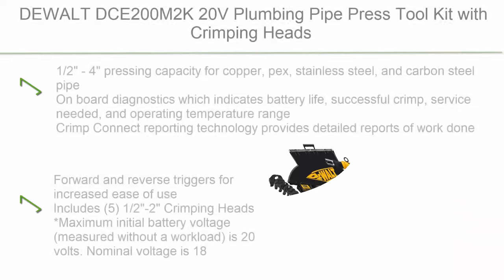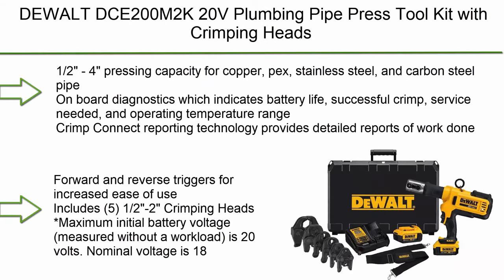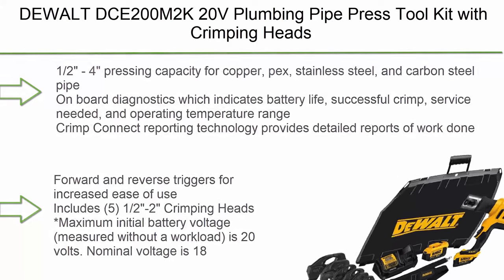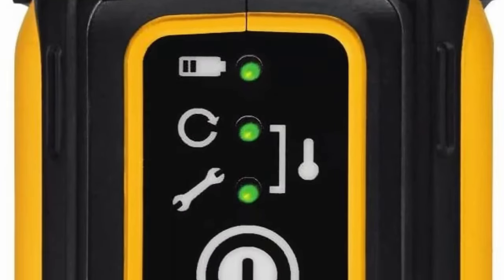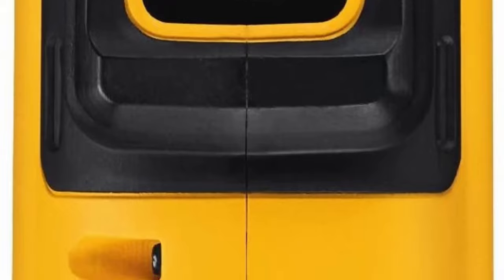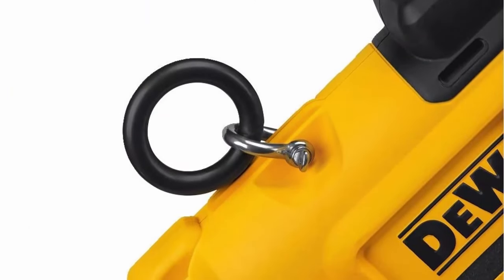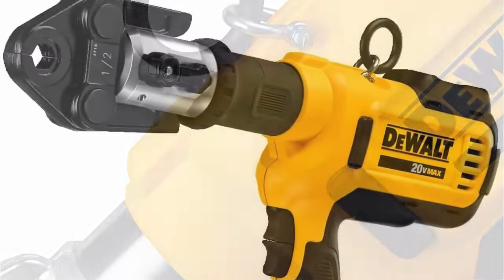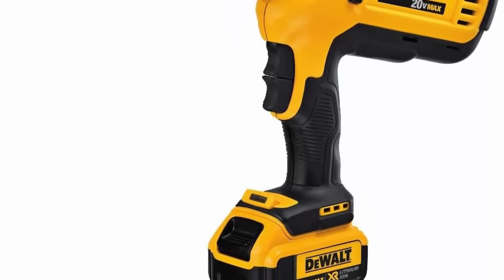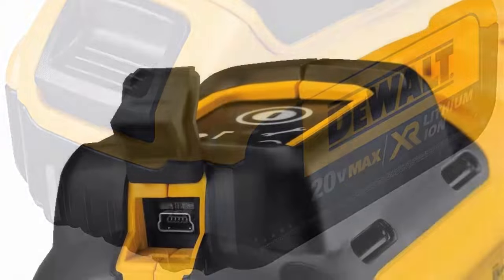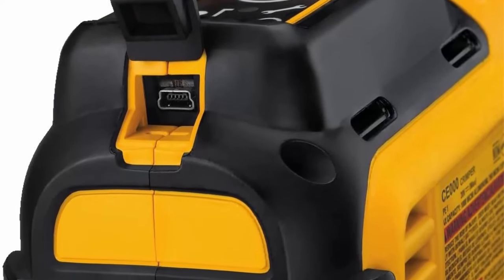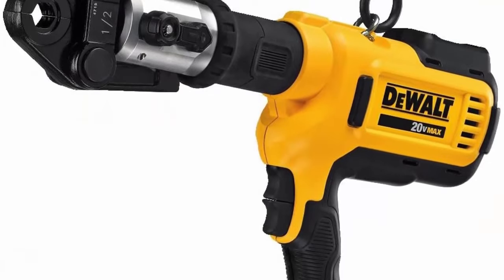Top 1: Duel DC200M2K 20V Plumbing Pipe Press Tool Kit with Crimping Heads, 1.5-4 pressing capacity for copper, PEX, stainless steel, and carbon steel pipe. On-board diagnostics indicates battery life, successful crimp, service needed, and operating temperature range. Crimp Connect reporting technology provides detailed reports of work done. Forward and reverse triggers for increased ease of use. Includes five 1/2 to 2 crimping heads. Maximum initial battery voltage measured without a workload is 20 volts, nominal voltage is 18.